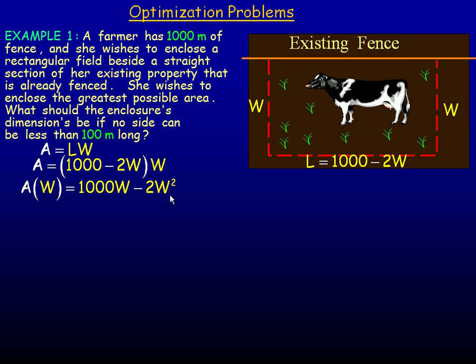And so we have a restriction here. In the last sentence it says, what should the enclosure's dimensions be if no side can be less than a hundred meters? So the width has to be greater than or equal to 100. Now there's an upper width as well, a largest possible width as well. And the largest possible width would come when the length is as small as possible.